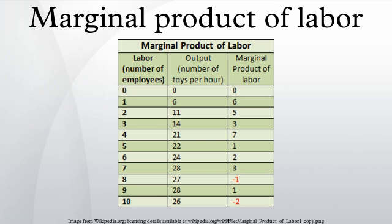Diminishing marginal returns: The falling MPL is due to the law of diminishing marginal returns. The law states that as units of one input are added, a point will be reached where the resulting additions to output will begin to decrease — that is, marginal product will decline. The law of diminishing marginal returns applies regardless of whether the production function exhibits increasing, decreasing, or constant returns to scale. The key factor is that the variable input is being changed while all other factors of production are being held constant. Under such circumstances, diminishing marginal returns are inevitable at some level of production.